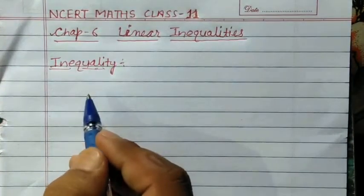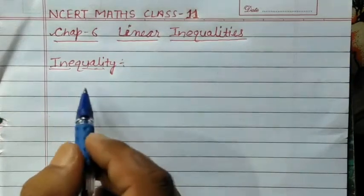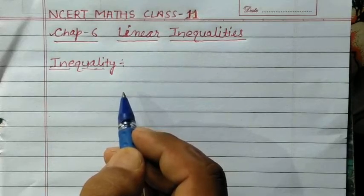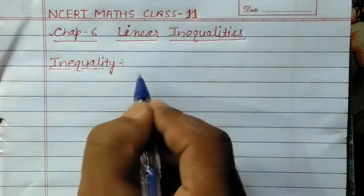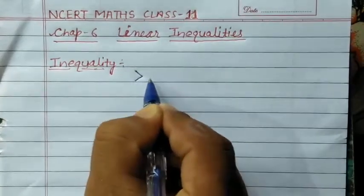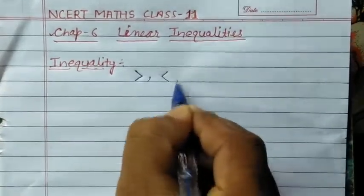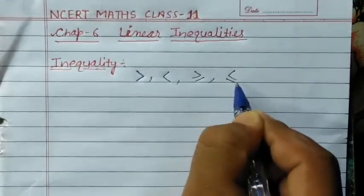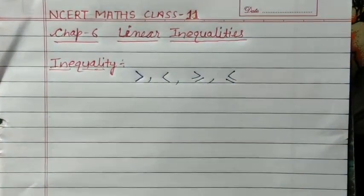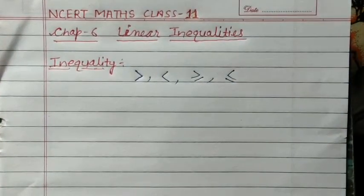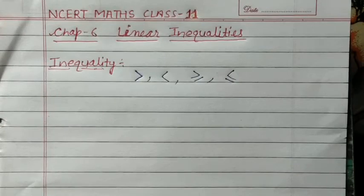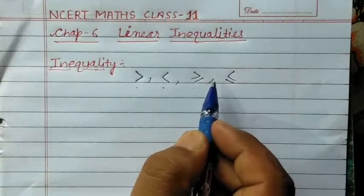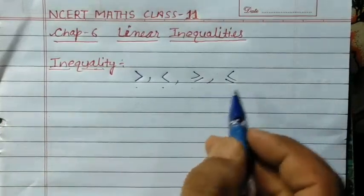At very first, we will discuss Inequality. So, what is Inequality? Inequality — we know the symbols: greater than, less than, greater than or equal to, and less than or equal to. Any statement involving these symbols — greater than, less than, greater than or equal to, less than or equal to — is called an Inequality.